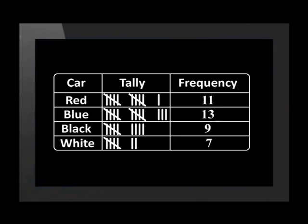Data is usually organized into frequency tables. This makes it easier to analyze and to represent in graphs. A frequency table lists items and uses tally marks to record the number of times an item occurs. Each mark in the tally column indicates one occurrence.